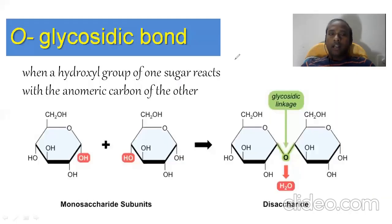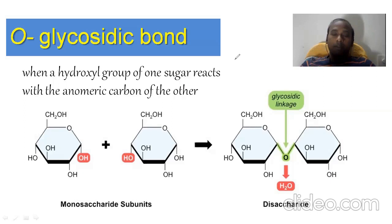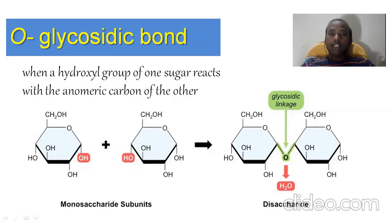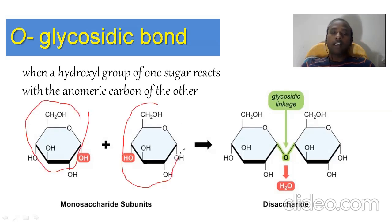The connecting link between two monosaccharides is the glycosidic bond. This slide is exclusively about how the glycosidic bond is formed — this is very important. When a hydroxyl group (OH group) of one sugar, that is one monosaccharide, reacts with the anomeric carbon of the other monosaccharide. For example, if you take two glucose molecules, the numbering will be one, two, three, four, five, six carbons.